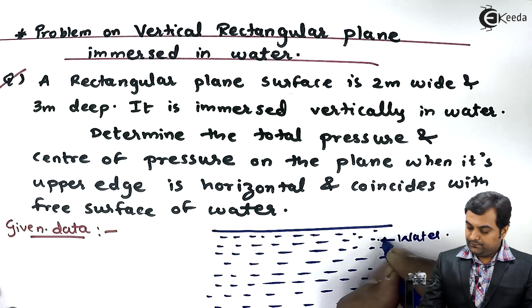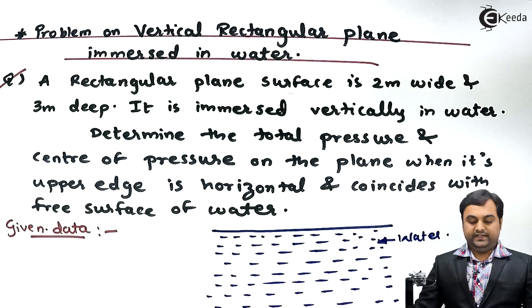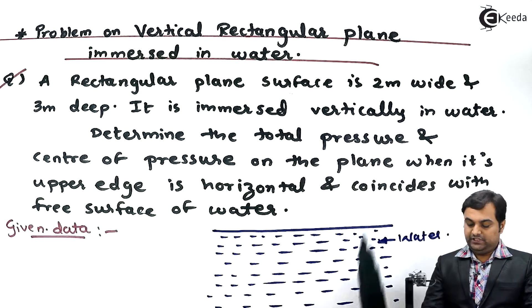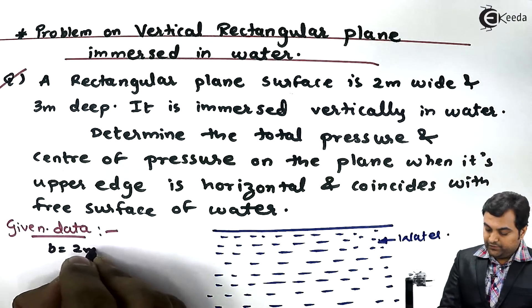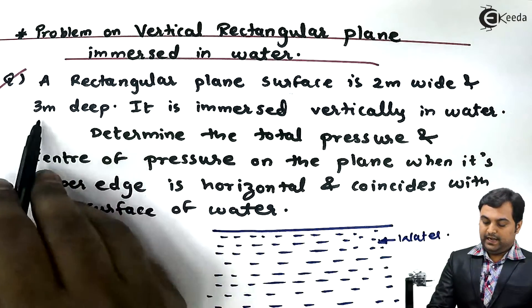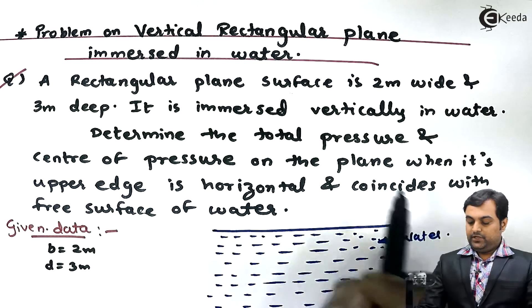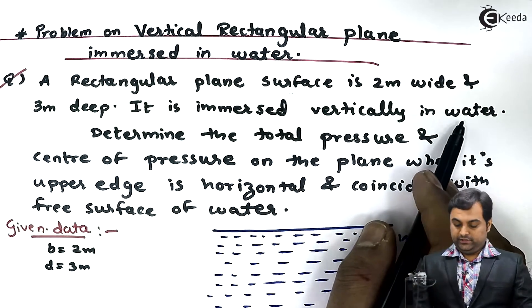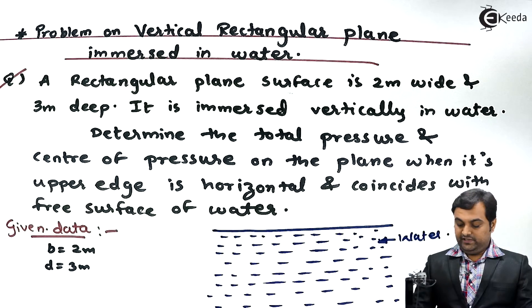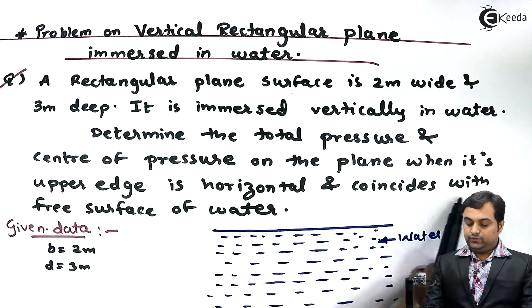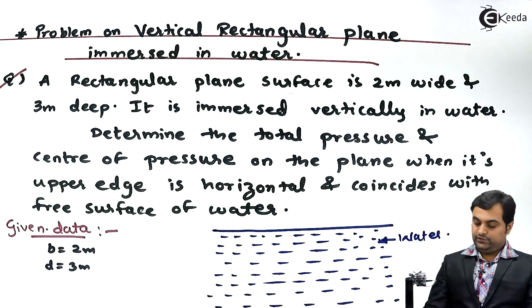This water body inside, a rectangular surface is immersed which is 2 meter wide, so B is equal to 2 meter, that is the width. And 3 meter deep, so depth D is 3 meter. Now it is immersed vertically in water and the condition is given that the upper edge is horizontal and coincides with the free surface of water.